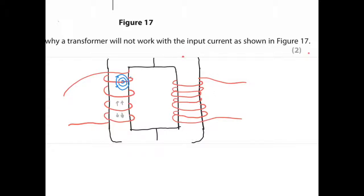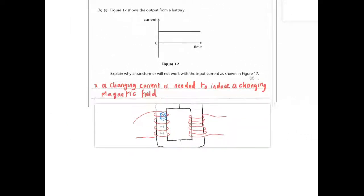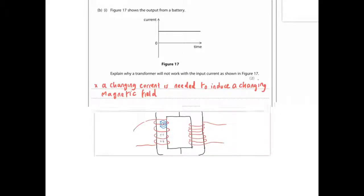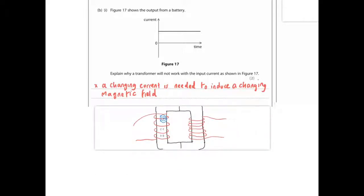How do you explain this in nice tidy two marks? A changing current is needed to induce a changing magnetic field. That's all we're saying here. So you need a changing magnetic field to get transformers working and a changing current is needed to induce that changing magnetic field.